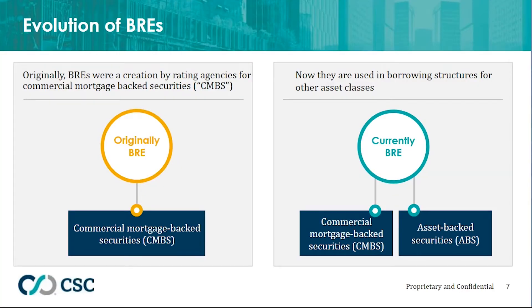Originally, bankruptcy remote entities were a creation by rating agencies for commercial mortgage-backed securities, or CMBS. Now they're used in borrowing structures for other asset classes called asset-backed securities. CMBS securities generally cover office spaces, hotels, and retail spaces like shopping malls. ABS securities cover consumer mortgage loans, home mortgages, credit card receivables, or other expected cash flows — individual securities gathered into tranches or groups with similar ranges of maturities and delinquency risks that are grouped together to sell.